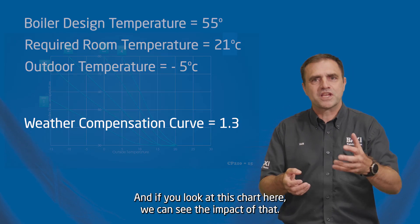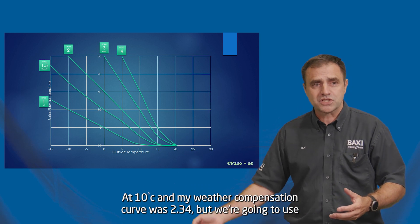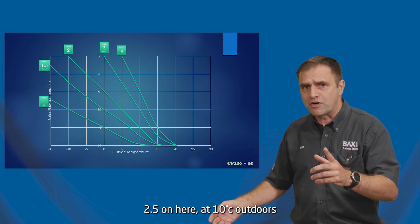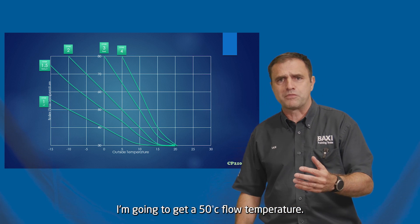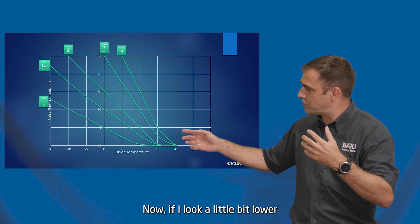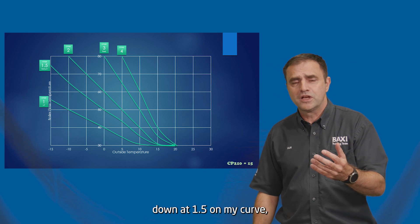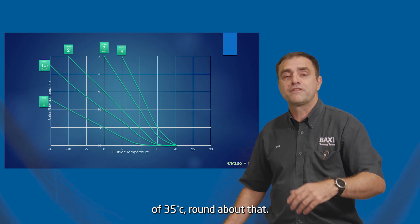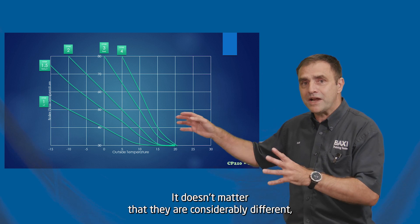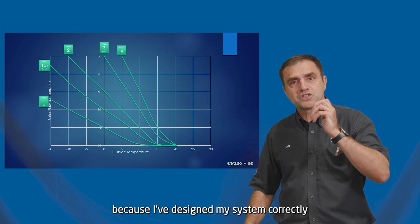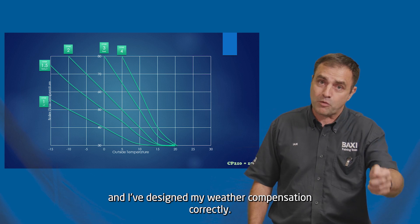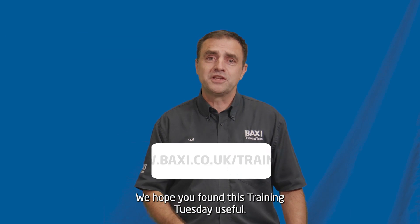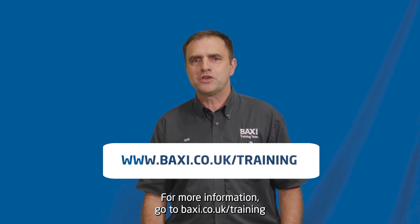And if you look at this chart here, we can see the impact of that. At 10 degrees outdoors, and my weather compensation curve was 2.5, I'm going to get a 50 degree flow temperature. If I look a little bit lower down at 1.5 on my curve, that same outdoor temperature is going to give me a flow temperature of around 35 degrees. It doesn't matter that they are considerably different — because I've designed my system correctly and I've designed my weather compensation correctly, my room temperature will still achieve that 21 degrees. We hope you found this Training Tuesday useful. For more information, get onto baxi.co.uk/training.